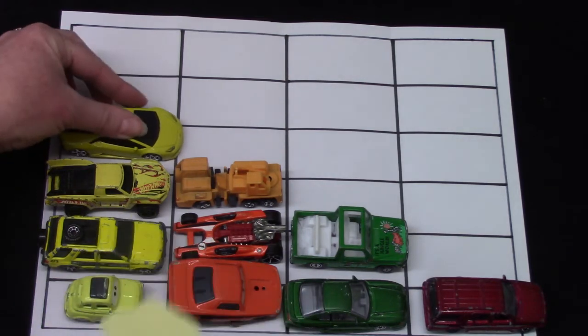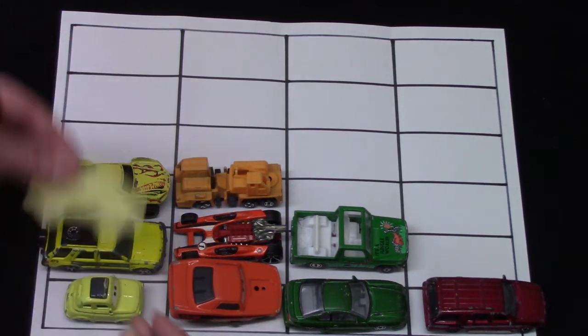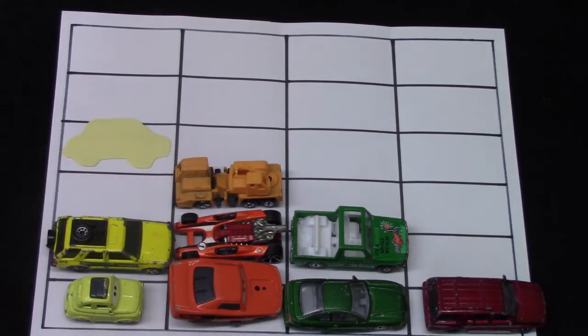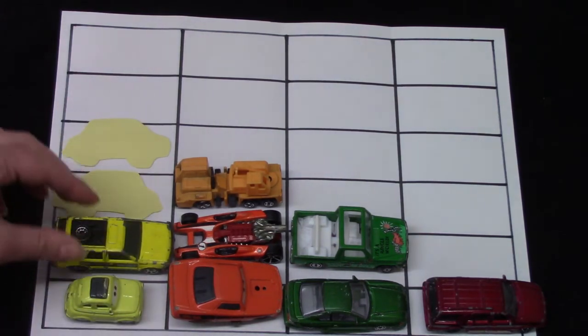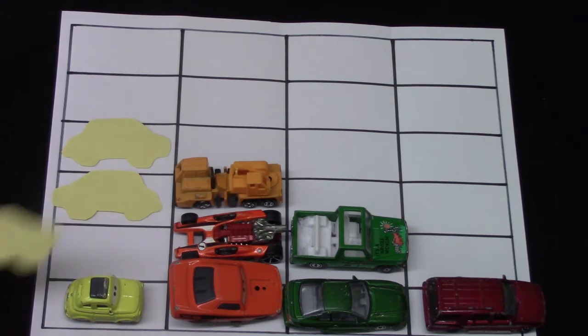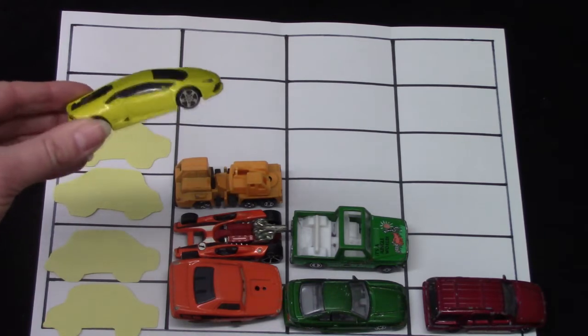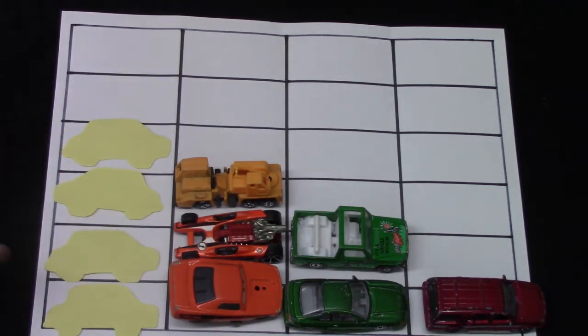I'm gonna back this one up. There's one, and then I'm gonna back this car up and put in another one. One, two, three, and four. This is just a picture of a yellow vehicle and it can take the place of our cars. I put four pictures because there were four cars.